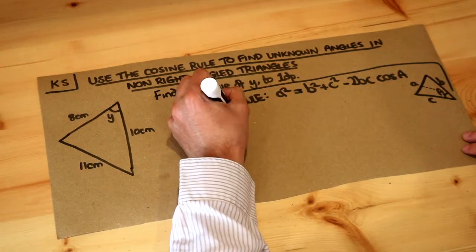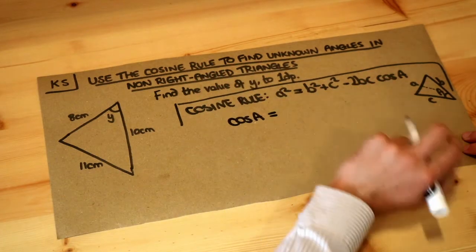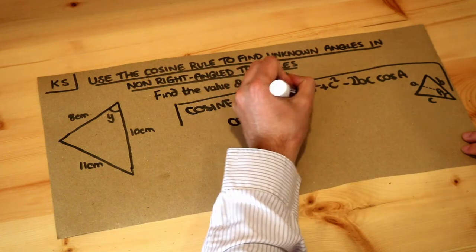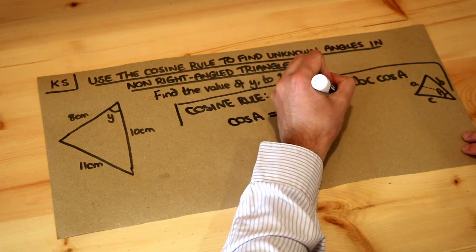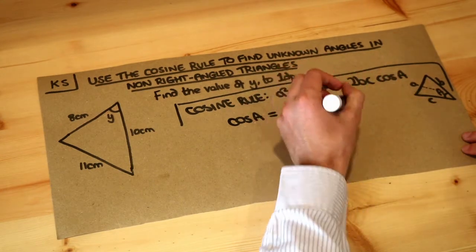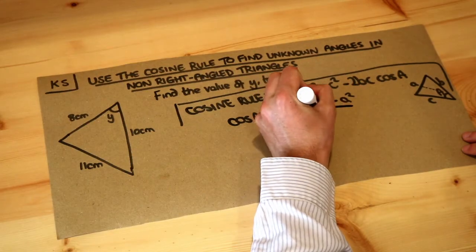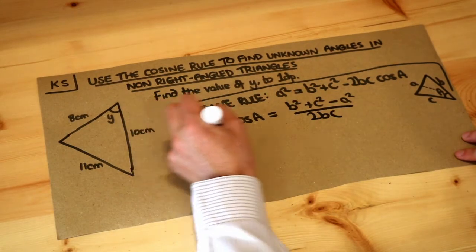Now I could go through the steps but for the sake of time I'm just going to rearrange it for you. Cos of A, when you rearrange this equation, is b squared plus c squared minus a squared over 2bc. I basically move the a squared over here and the 2bc cos A over here and then because I've got the 2bc in front of this I divide by that and you get this rearranged equation.